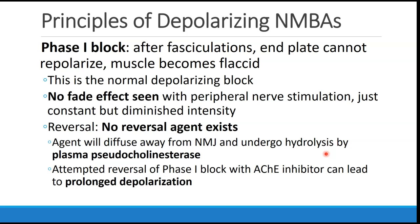Depolarizing drugs cause phase 1 or phase 2 block. Phase 1 is the common block we see with depolarizing agents. After fasciculations, the end plate cannot repolarize and the muscle becomes flaccid. This is the normal depolarizing block we see with drugs like succinylcholine. Patients who have paralysis from phase 1 block will not have any fade effect seen on the twitch monitor — it will show constant but diminished intensity of the twitches.